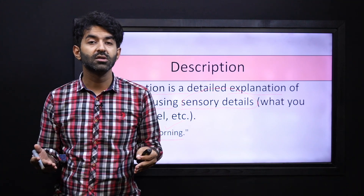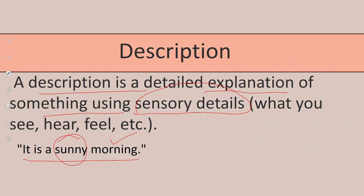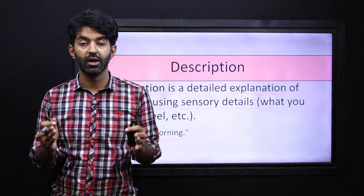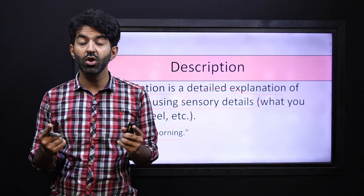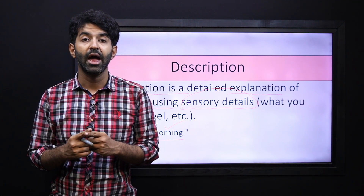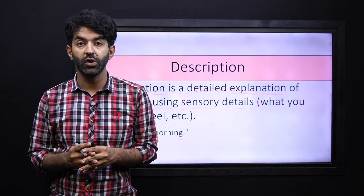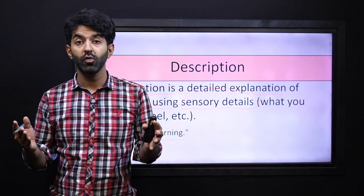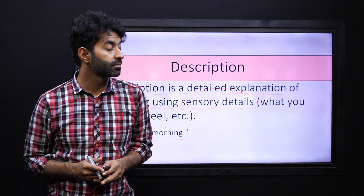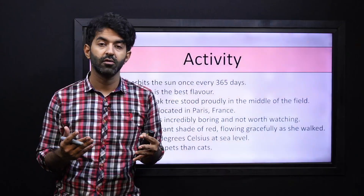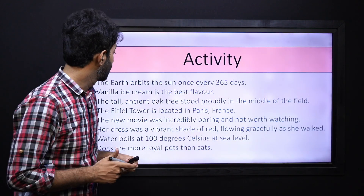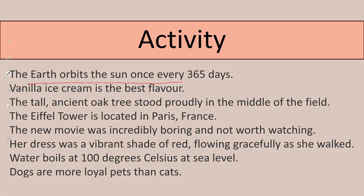Can you make some sentences with description? Take a moment and do this really quickly. Also, write a fact that you know is truthful and can be proven true. And write two or three opinions, which are the opposite of a fact. Now, here is an activity — you have to read all these and identify the fact and the opinion. 'The earth orbits the sun once every 365 days' — this is a fact.